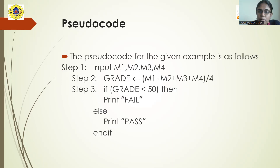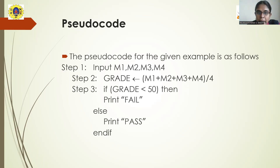Now let us see how to write the pseudocode for this given problem. As I said, pseudocode is an intermediate between algorithm and program, and it is almost similar to that of a computer language. Initially, we have to receive inputs. For that, either you can use the keyword 'input' or 'read'. So you can write it as 'input M1 M2 M3 M4' or 'read M1 M2 M3 M4'. This keyword read or input is used to indicate that you are going to get the input from the user.